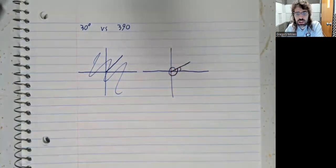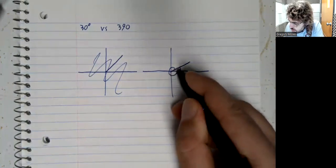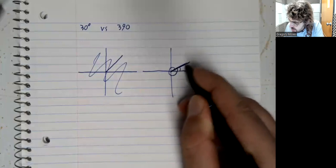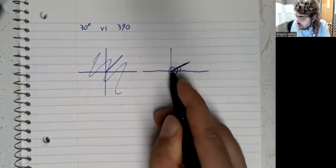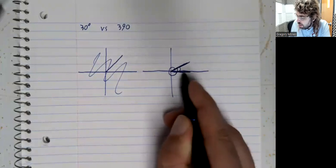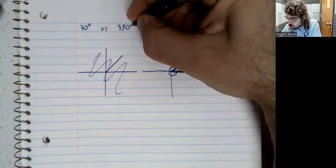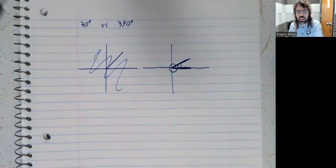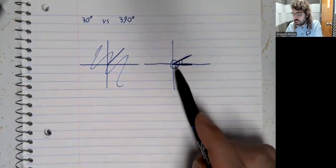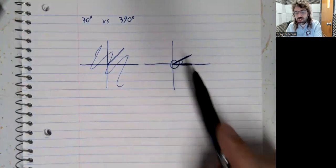390 degrees looks like this. And if you remember that an angle has a terminal side and an initial side, 30 degrees and 390 degrees have the same terminal side.